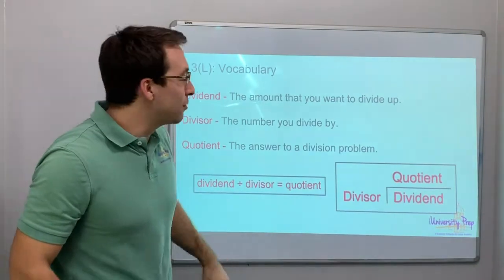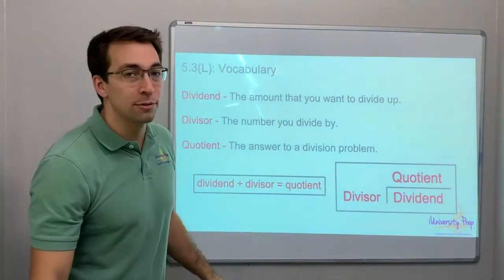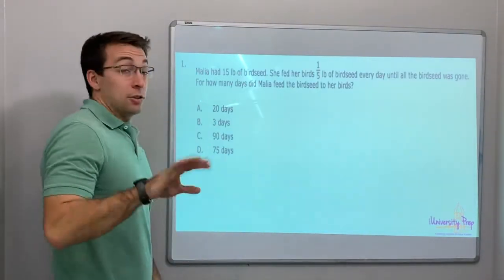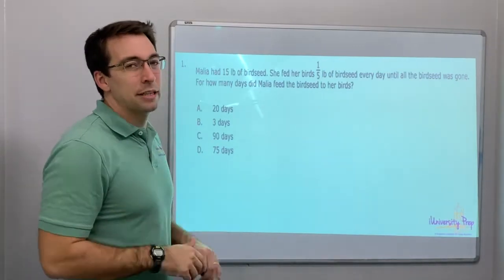Got to know your vocab. Quotient's the answer to a division problem. Dividend divided by divisor equals quotient. Okay. There's five questions. Five questions in this video. It might be just a little bit longer than normal.